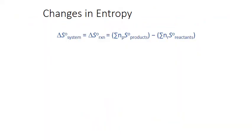These standard absolute entropies can be used to calculate the change in entropy at standard conditions for any chemical process. Delta S system — which is the same as delta S reaction — is simply the sum of the absolute entropies of the products times their molar coefficients (N) from the balanced chemical equation, minus the sum of the absolute entropies of the reactants times their molar coefficients. The degree sign on our delta S term reflects that we're using standard absolute entropies.